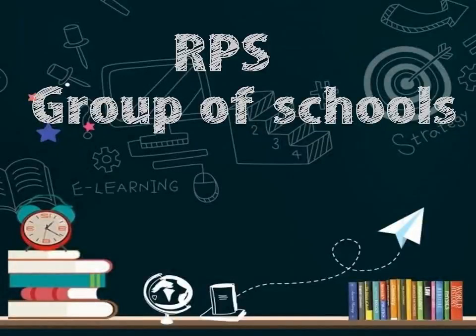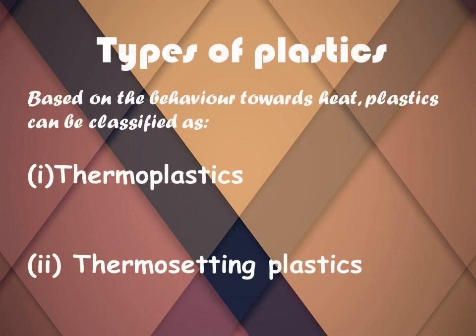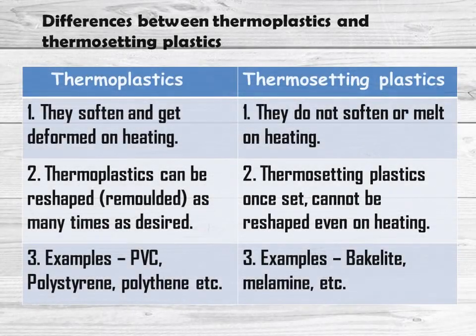Welcome to RPS group of schools online classes. Let's continue with session 5 of our chapter synthetic fibers and plastics. In the previous session we discussed the two types of plastics. Based on behavior towards heat, plastics can be classified as thermoplastics and thermosetting plastics. Let us continue today's session by studying the differences between thermoplastics and thermosetting plastics.